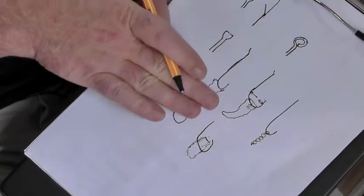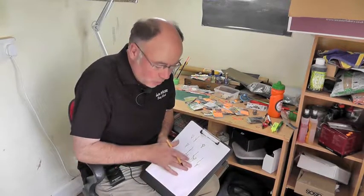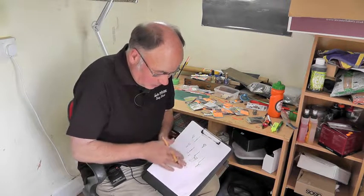So there we are. Eyes, shank, gape, bends. Everyone with it so far? What we're trying to do is simplify the hook down to its various bits.